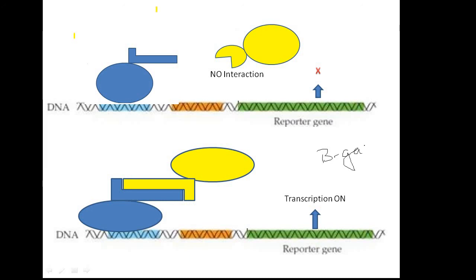Functional beta-galactosidase will cleave X-gal, a chromogenic substrate, producing a blue color. This is how we can identify protein-protein interactions. In many cases, different kinds of reporter genes are used — for example, engineered cells unable to synthesize a particular amino acid can also serve as a selection system. When using lacZ, blue colonies indicate that the two proteins are interacting.